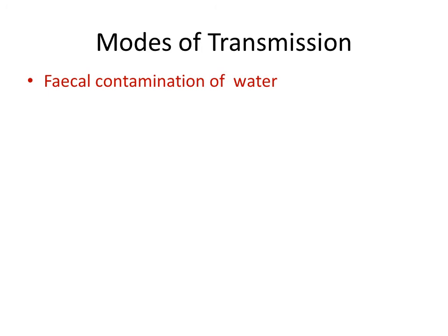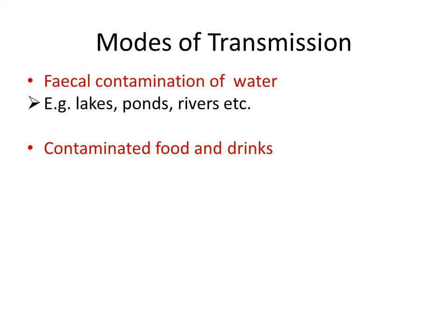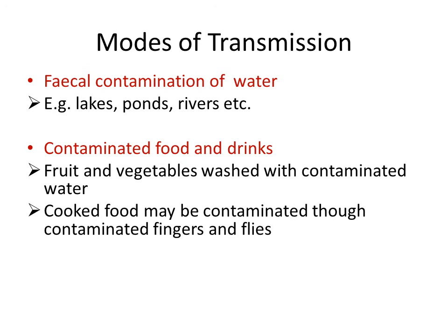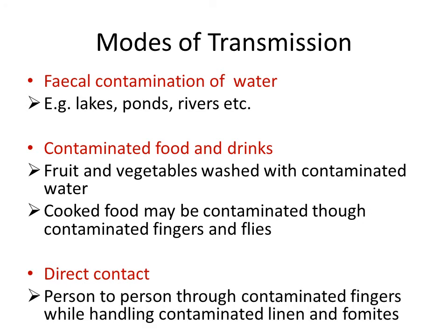Cholera is transmitted through fecal contamination of water sources such as lakes, ponds, and rivers when used directly for drinking. It can also spread via contaminated foods and drinks, fruits and vegetables washed with contaminated water, and cooked food contaminated through fingers or flies. Transmission also occurs through direct person-to-person contact via contaminated fingers while handling contaminated linen and fomites.